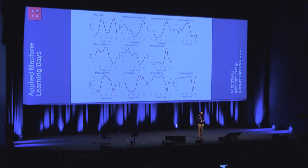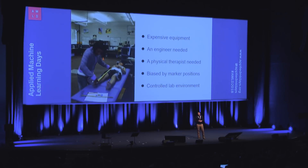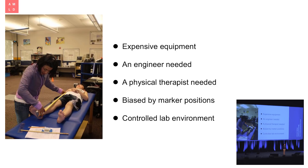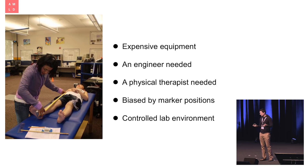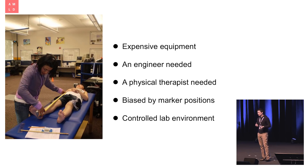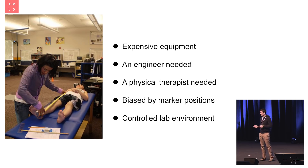But there are a few flaws. First, the equipment is super expensive — those cameras cost $100,000, so only a few clinics even in the US can afford them, and in poor countries it's simply not data-driven. You need an engineer to start, stop, and run the pipeline — again, a huge cost. You need a physical therapist to place the markers, which can cause bias: if you put markers in the wrong place, you collect corrupt data, and corrupt data means corrupt decisions. Finally, you have a controlled lab environment, so the data reflects walking in the lab, not how people actually move.